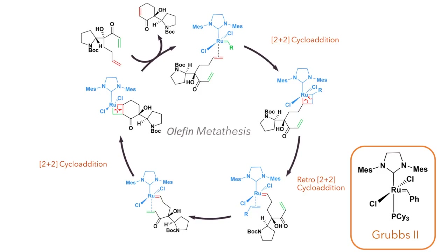With the synthesis of the diene complete, the next step was the formation of a cyclohexane ring. This was accomplished by using an olefin metathesis reaction using the Grubbs 2 catalyst. The reaction begins with the coordination of the more nucleophilic alkene to the catalyst following the loss of the phosphine ligand. A 2+2 cycloaddition occurs between this alkene and the methylene ligand present on the metal centre, followed by a retro-2+2 cycloreversion.